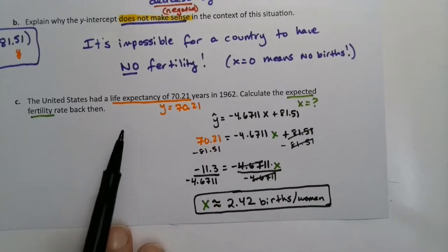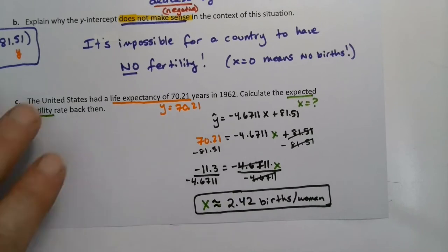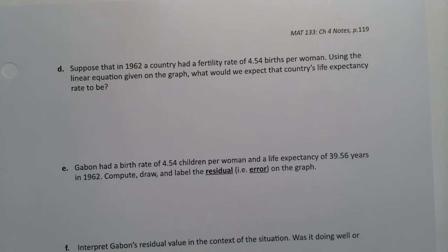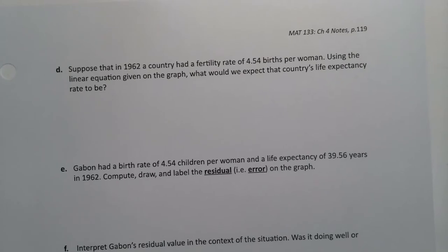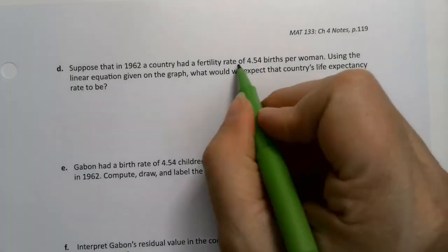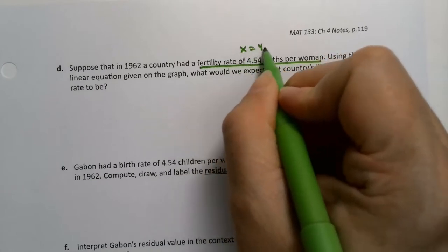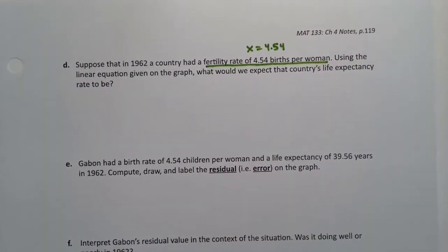Now, since we went that way with it, of course we can go the other way, which is the next question. Suppose that in 1962, a country had a fertility rate of 4.54 births per woman. So that's an X. They're telling you, hey, X was 4.54.